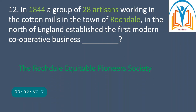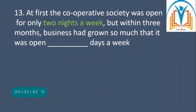The name of that business was the Rochdale Equitable Pioneers Society. Next question: at first the cooperative society was open for only two nights a week, but within three months business had grown so much that it was open a certain number of days a week.